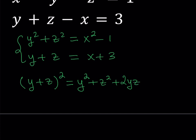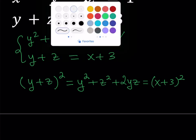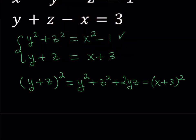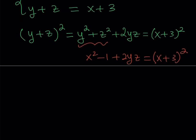We know that y squared plus z squared is equal to x squared minus 1, so I can substitute that in. So x squared minus 1 plus 2yz equals x plus 3 quantity squared. From here, I'd like to isolate yz by putting all the x terms on one side.